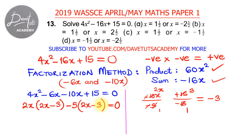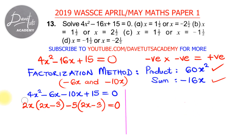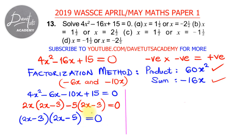So we now have 2x(2x minus 3) minus 5(2x minus 3) equals 0. We can see that 2x minus 3 is a common factor. Factoring it out, we get (2x minus 3)(2x minus 5) equals 0.